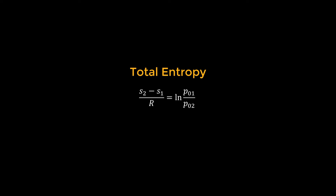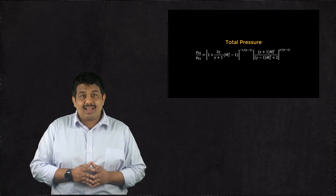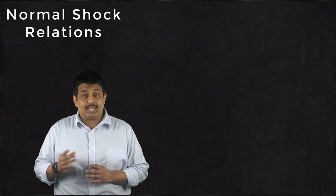Using this analysis, the total pressure ratio is related to the upstream Mach number using the following equation. Now that we have looked at all the relationships, let us understand what happens across a normal shock.